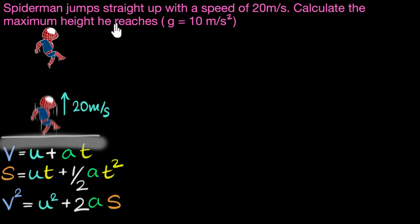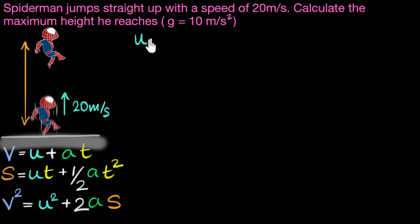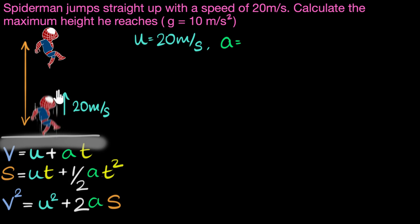We need to calculate the maximum height he reaches. Eventually he'll reach a maximum height and then start falling back — we need to find that distance. We know the initial velocity U with which Spider-Man jumps: 20 meters per second. We also know the acceleration. This time, as Spider-Man goes up he slows down — he's losing velocity — so the acceleration becomes negative. It's a deceleration, so acceleration is minus 10 meters per second squared.